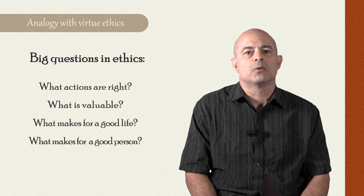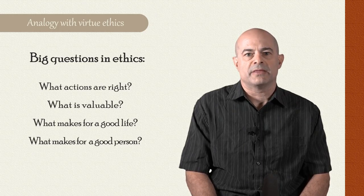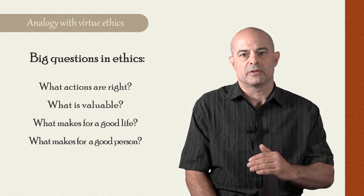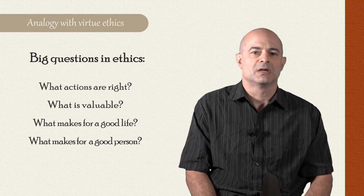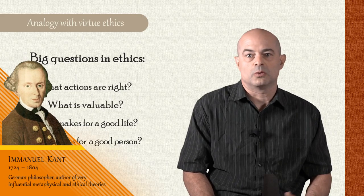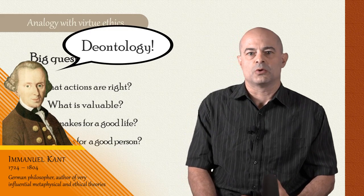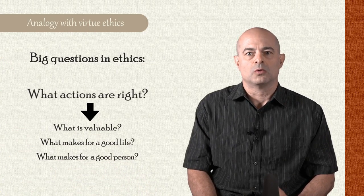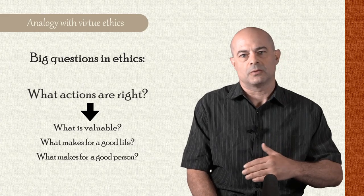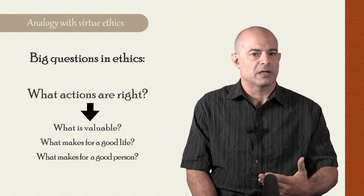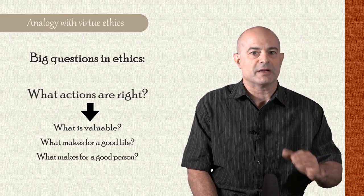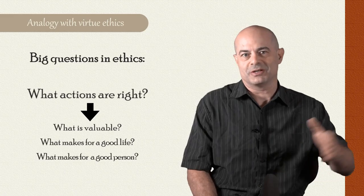Now, different ethical theories tend to make one of these questions most fundamental. Once you've got an answer to that fundamental question, you can go on to answer the other questions by referring back to what you think is most fundamental. For example, in ethics there are deontological theories, such as Immanuel Kant's theory, which tends to focus on the issue of right action — what makes right action. Only once he's got the answer to that most important question does Kant go on to talk about what's valuable, what kind of life should I lead, or what makes for a good person — and these are understood in terms of which actions are right. So for example, a good life would be a life full of right action understood in this Kantian way.